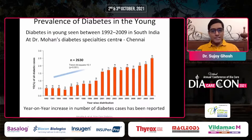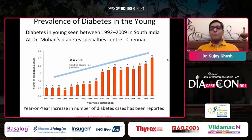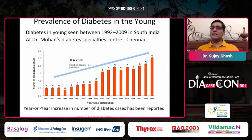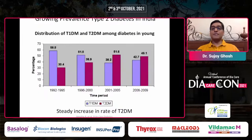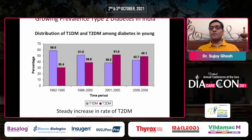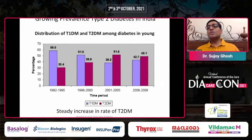This is Dr. Mohan's data. At his own center, the number of young people coming in with diabetes has progressively increased over the last 20 to 30 years. What has also happened is the proportion of type 1 versus type 2 has undergone a dramatic change, with type 2 now being more common than type 1 in those below the age of 25, even those below the age of 20.